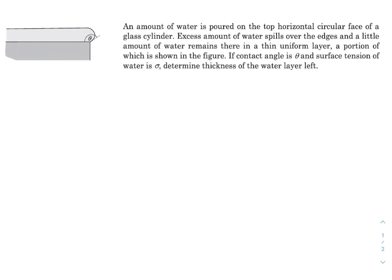What is up everyone, I hope all of you are doing great. In today's question we have an amount of water poured on the top horizontal circular face of a glass cylinder. Excess amount of water spills over the edges and a little amount of water remains there in a thin uniform layer, a portion of which is shown in the figure. If the contact angle is theta and surface tension of water is sigma, determine thickness of the water layer left.